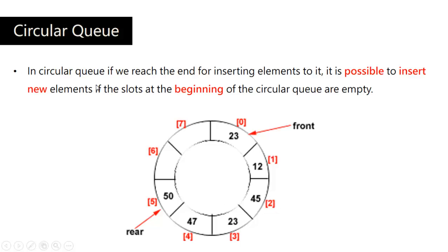In a circular Queue, if we reach the end while inserting elements, it is possible to insert new elements if the slots at the beginning of the circular Queue are empty. The 0th location is the front end with value 23, first location has 12, second has 45, third has 23, fourth index has 47, fifth index has 50, and the 6th and 7th indexes are null — they have not been initialized.